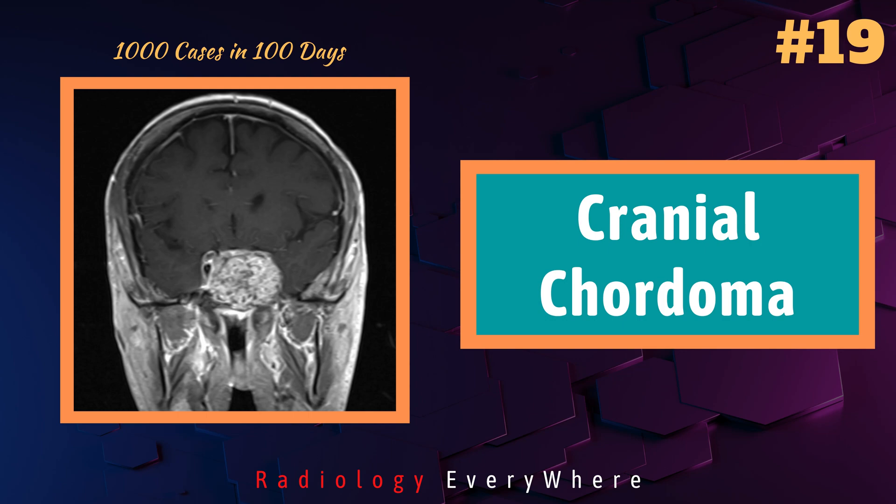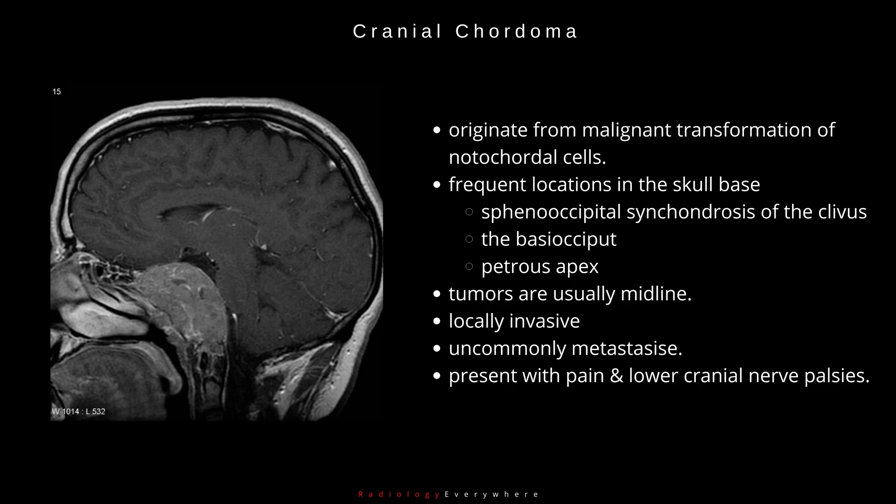In this video we discuss Chordomas. Chordomas originate from the malignant transformation of notochordal cells. Their most frequent location in the skull base is the sphenooccipital synchondrosis of the clivus, followed by the basiocciput and petrous apex.